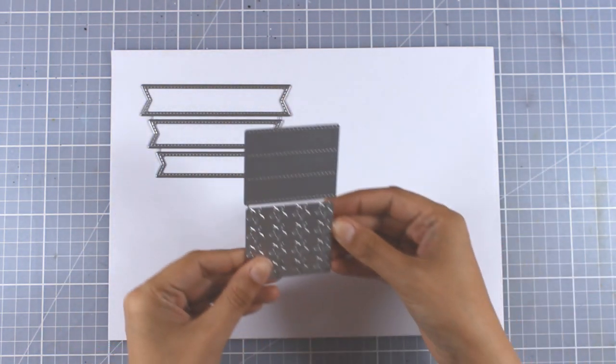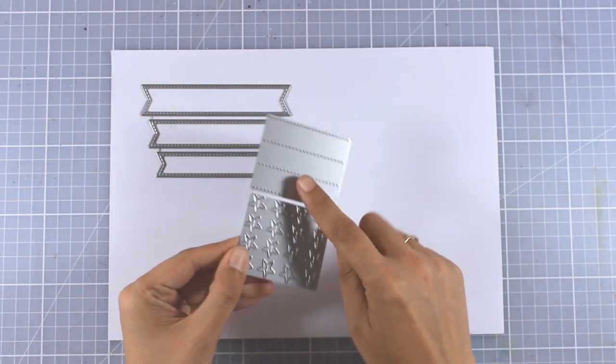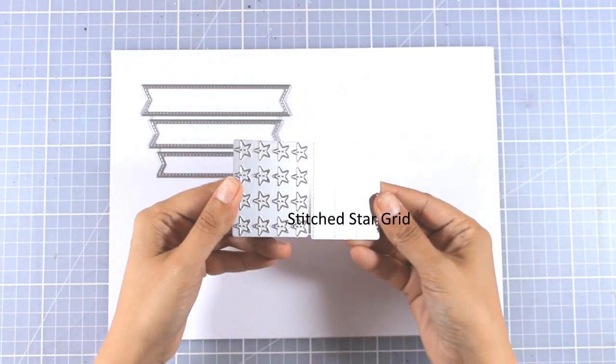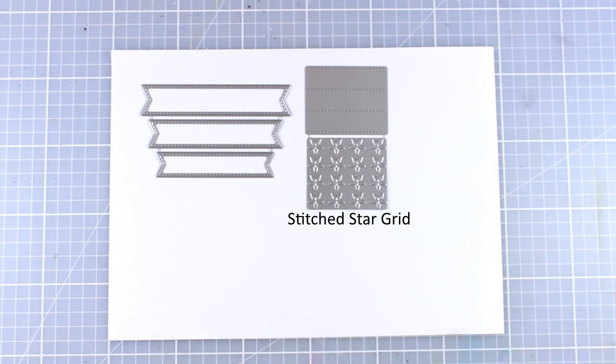This is the Stitched Star Grid. It comes with two different plates. As you can see, one doesn't cut out but only adds that stitched line, and the other one cuts out tons and tons of stars.